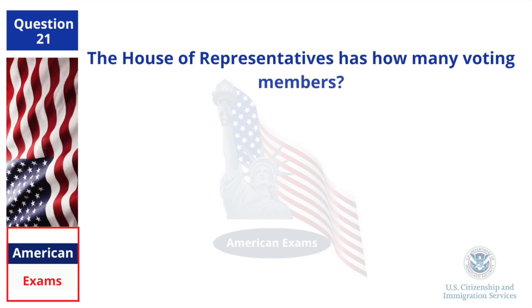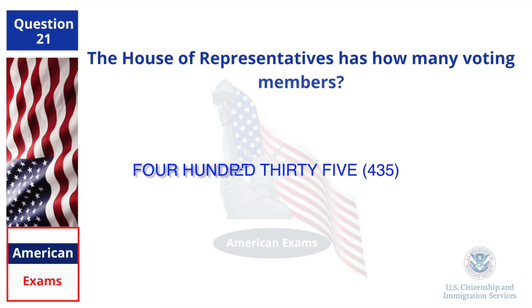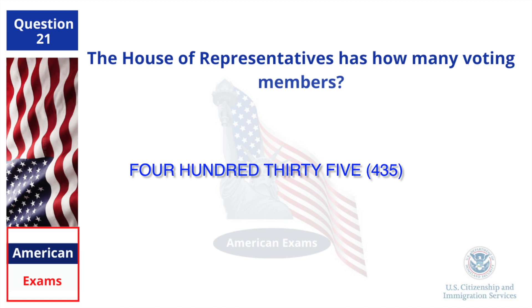The House of Representatives has how many voting members? 435.